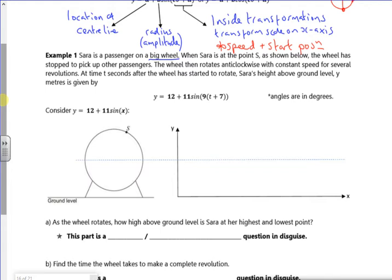When Sarah is at the point S, the wheel is stopped to pick up another passenger. The wheel then rotates anti-clockwise with constant speed for several revolutions. So let's have a think about the 12. The 12, that's the position of my centre line. So if my centre line, there's my person, there they are in a little box. So that's 12 metres high.